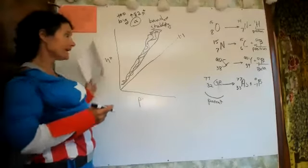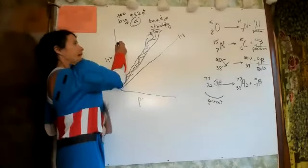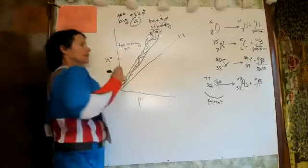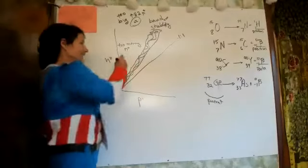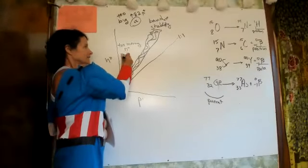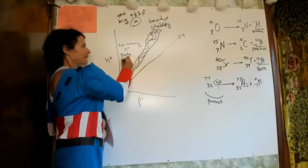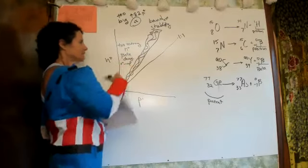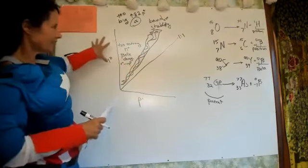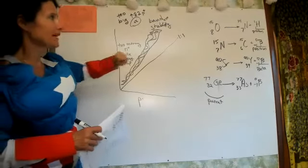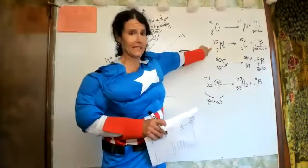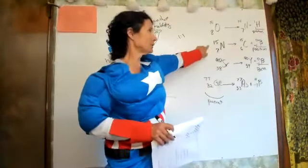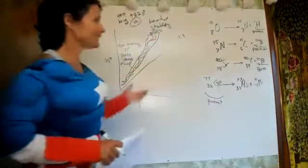If you are above the band of stability, it means you have too many neutrons. Beta decay changes a neutron into a proton. So if something has too many neutrons, like nitrogen-15 when nitrogen wants to be nitrogen-14, beta decay is predicted.